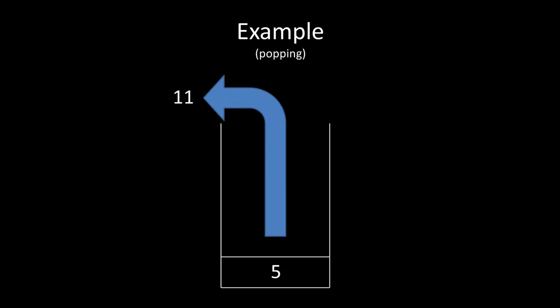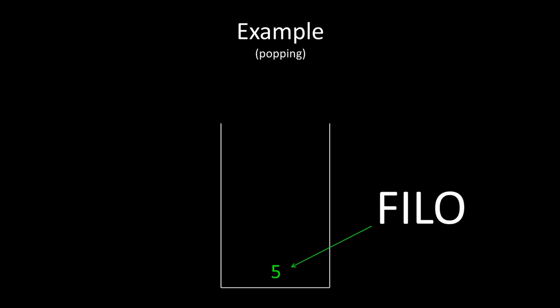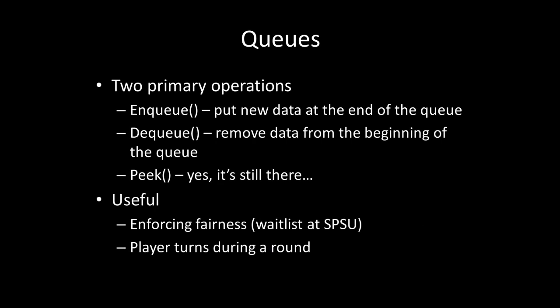We could push and pop any number of times, but notice that when we get down to the last element, this was the first element that we put onto the stack. Therefore, we're going to say that stacks are first in, last out. Now queues, on the other hand, have two primary operations. There's enqueue, where you're putting new data at the end of the queue. And then there's dequeue, where you're removing data from the beginning of the queue. Also realize that we do have a peek method, and it's there in case you want to use it. Queues are really good for enforcing fairness — a good example of this would be the waitlist at SPSU. In gaming, you could use it for any number of things, including player turns during a round.